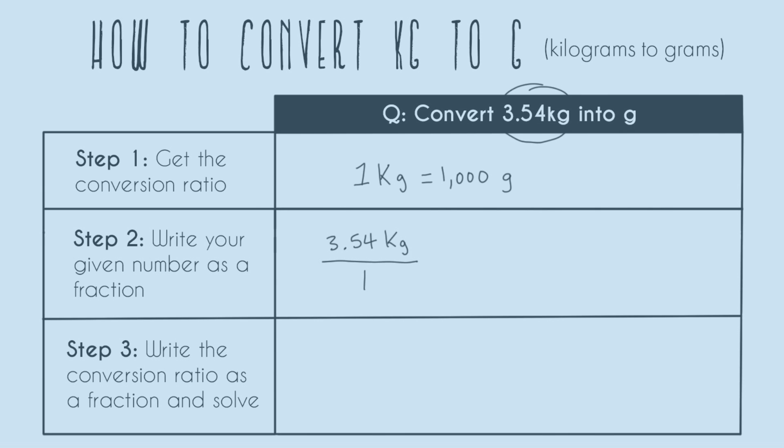Now that we have this we can go to step 3, which is write the conversion ratio as a fraction and solve. The way we do that is I'm going to pull down this term we had in step 2, and then I go back to my conversion ratio which is step 1.